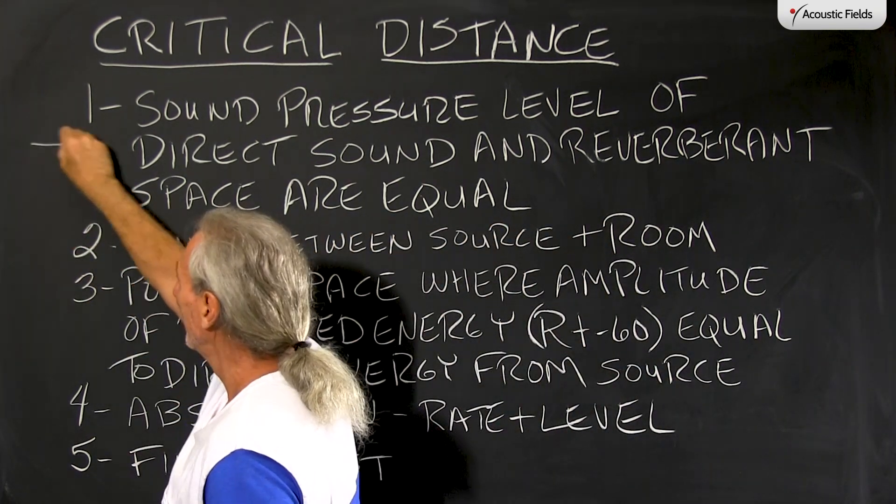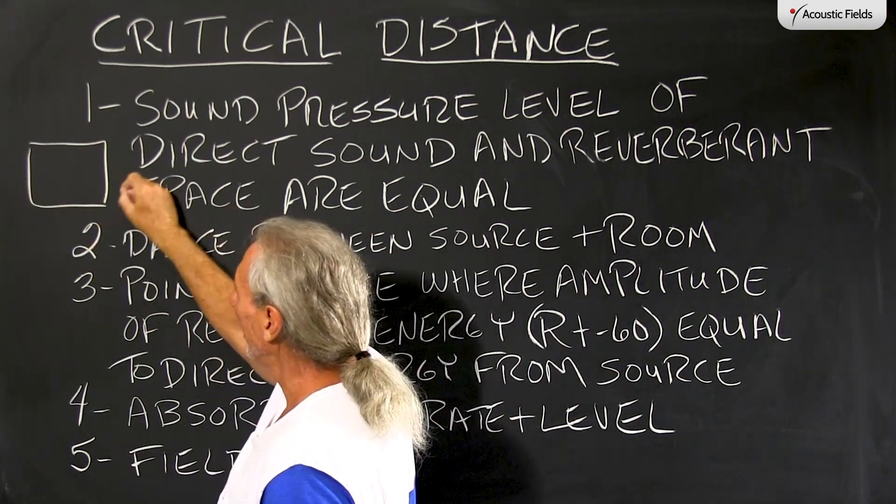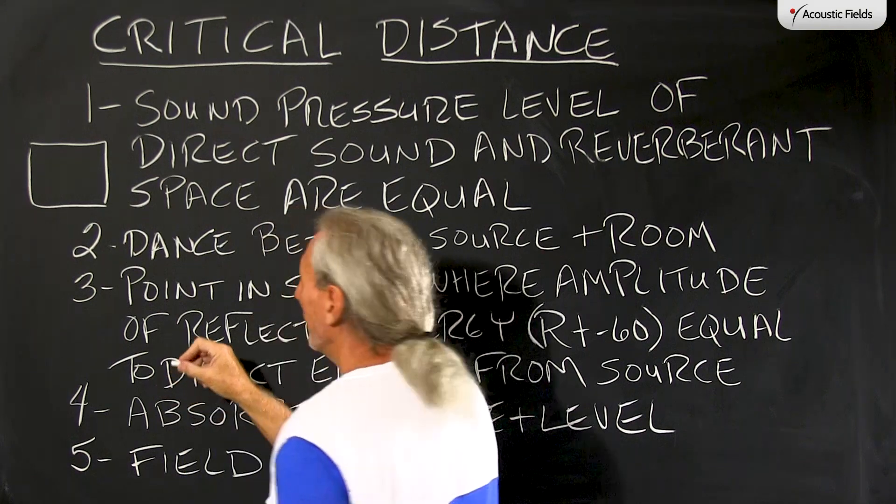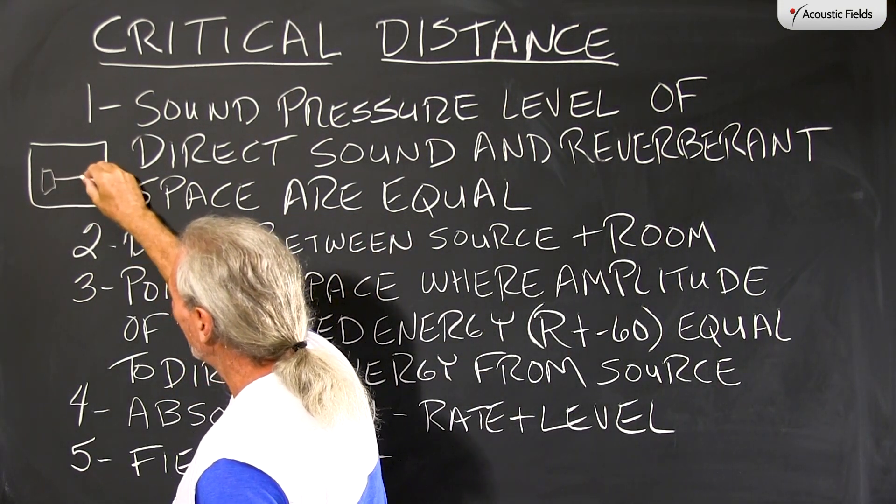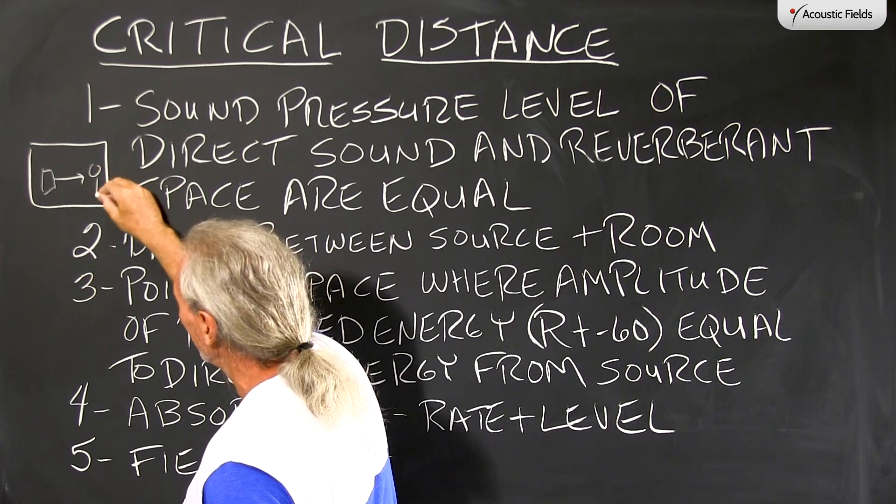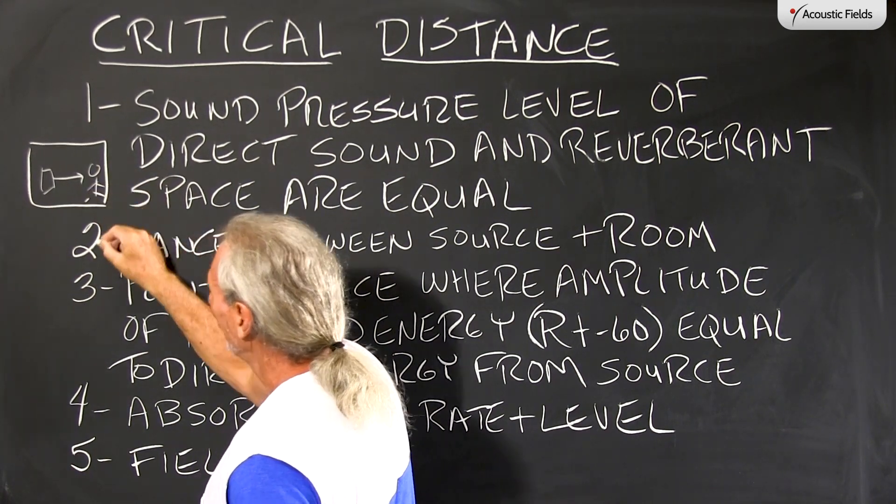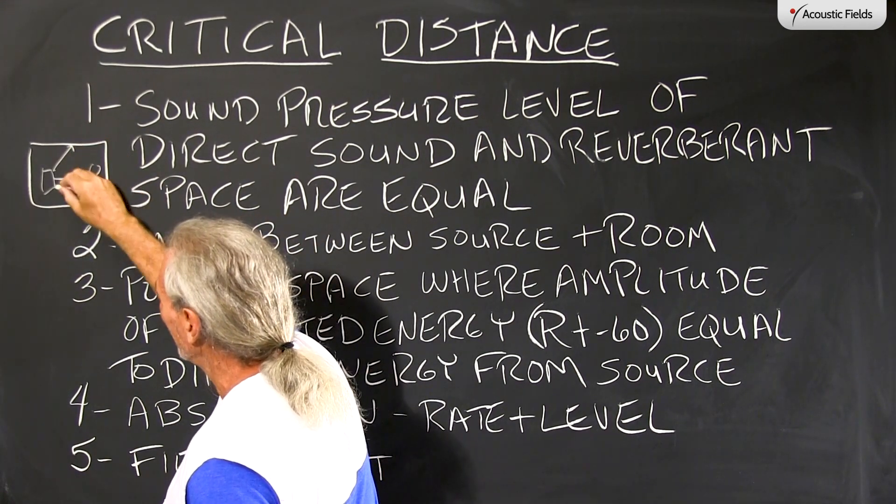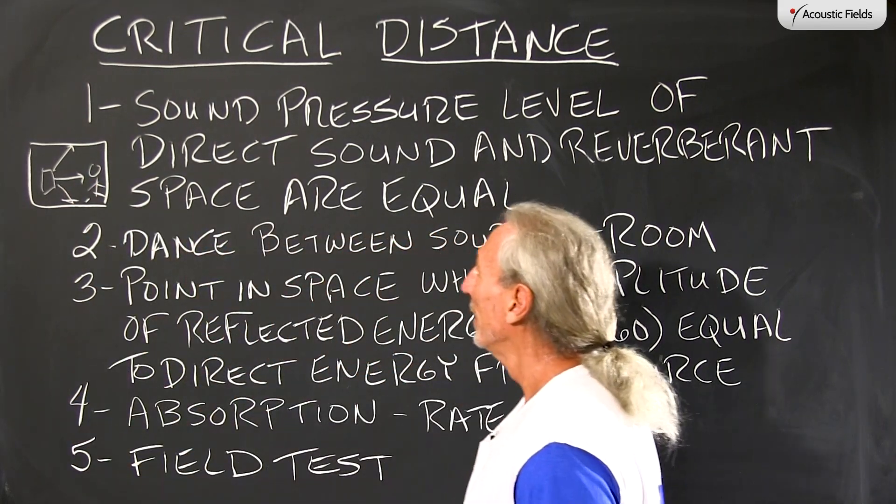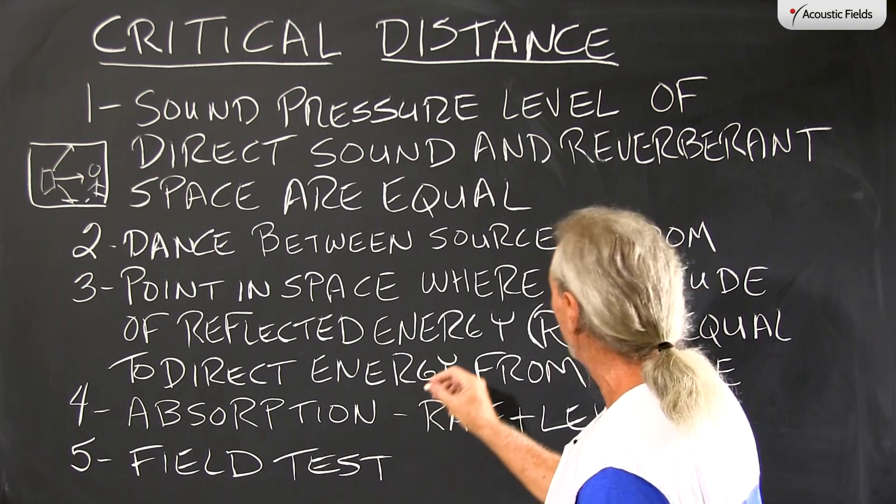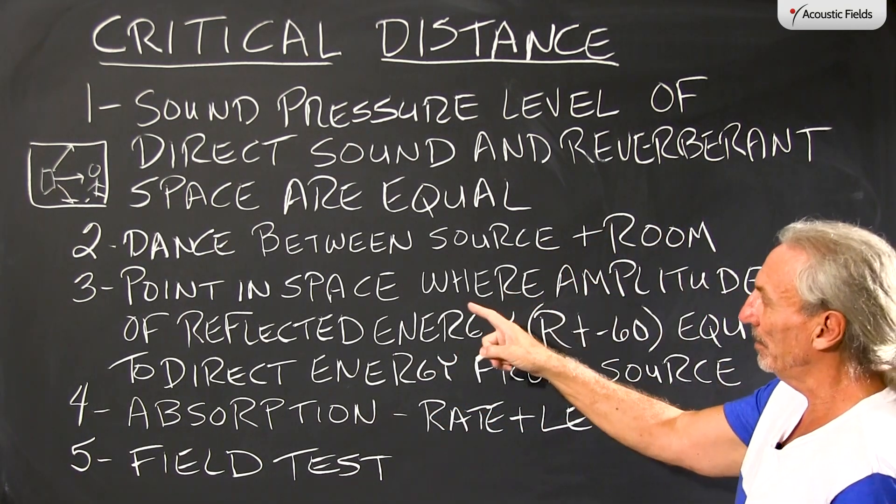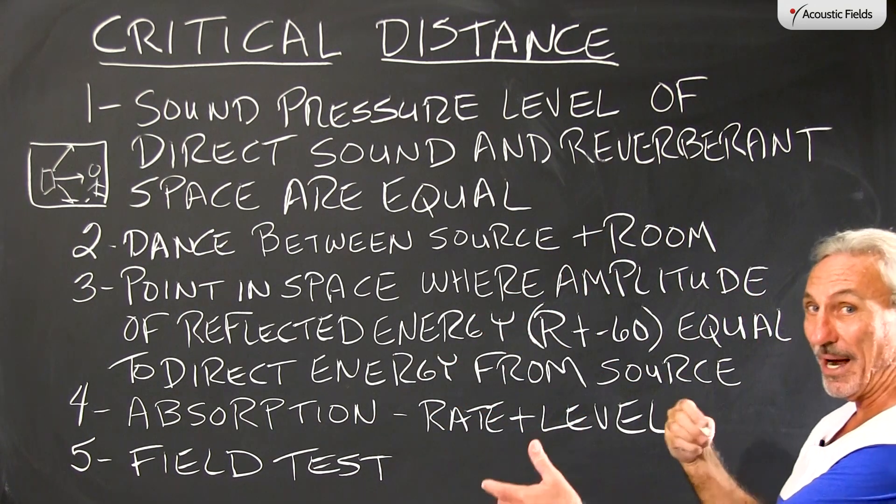So if we come over here and look at our room, we have our speakers with the direct energy and then we have ourselves here. And then we have all the reflected energy from the room. So the critical distance is the distance where the source and the room are kind of interacting.